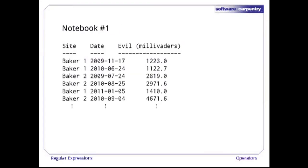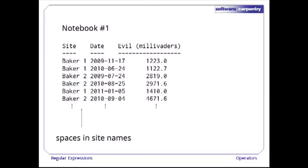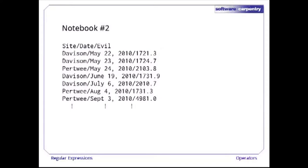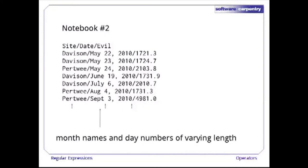Notebook number 1 has site, date, and background evil level with single tabs as separators. Some site names have spaces, and dates are in international standard format with four digits for the year, two for the month, and two for the day. The data in notebook number 2 also has three fields but these are separated by slashes. Months are reported using their names and are of varying length. The days are also of varying length.